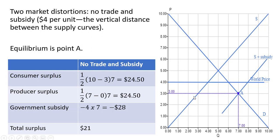So it's going to be this triangle right here. Difference between $7 and the height of the supply curve, all the way up to that seventh unit. So the area here is going to be again $24.50.